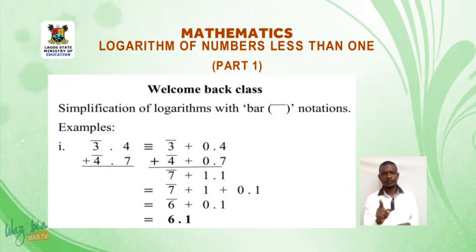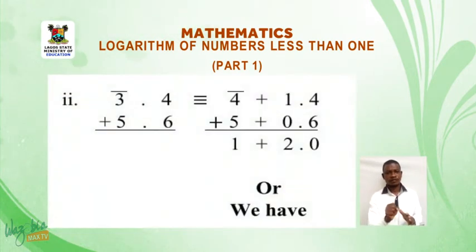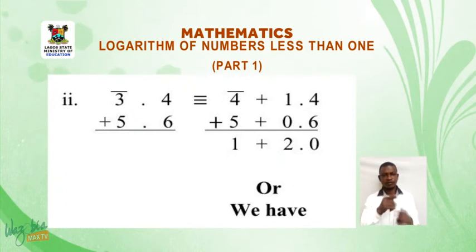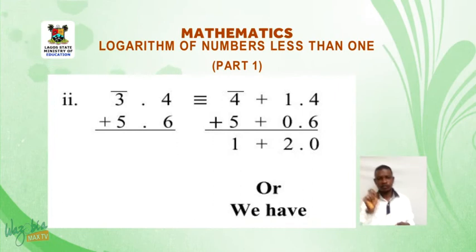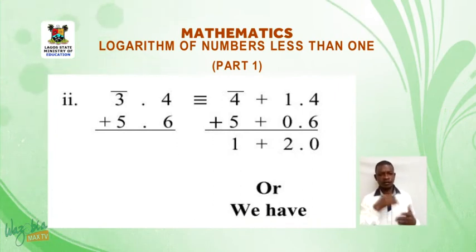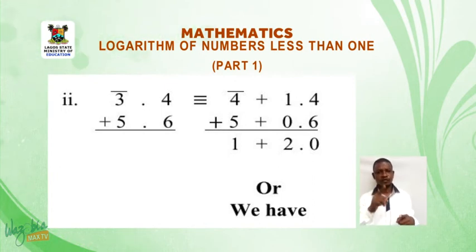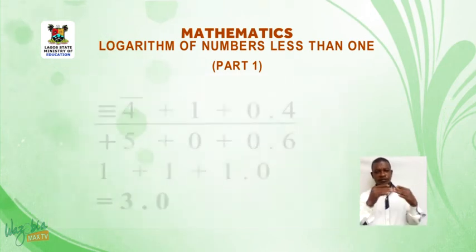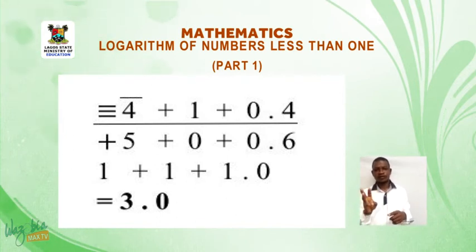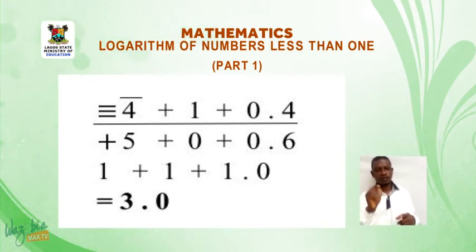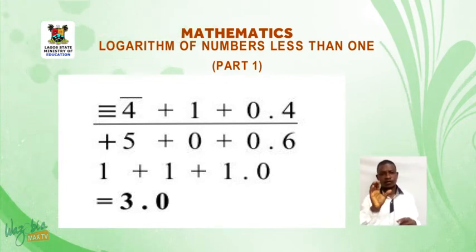The second example: bar 3.4 plus 5.6 is equivalent to bar 4 plus 1.4 plus 5 plus 0.6. Adding them together will have 1 plus 2.0, which gives us 3.0. So the same answer whichever way.